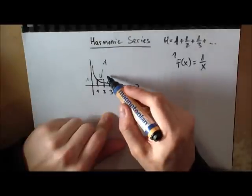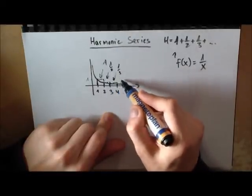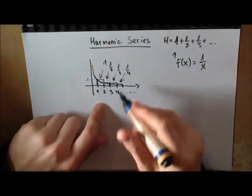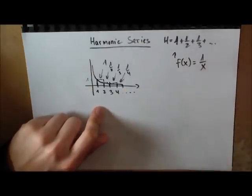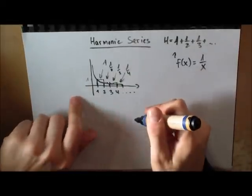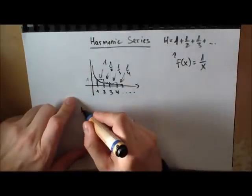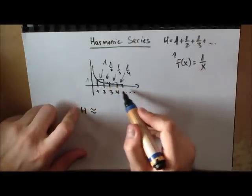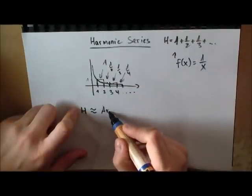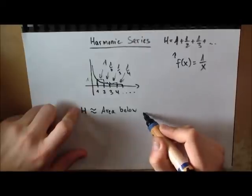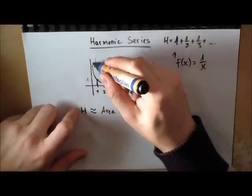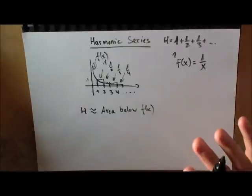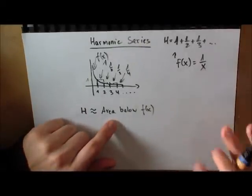Each rectangle has height 1/2, 1/3, 1/4, and so on. As we go to infinity the approximation gets better and better. So we can say that the harmonic series is somehow related to the area below the function f(x) equals 1/x.